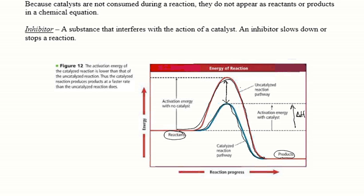An inhibitor is a substance that interferes with the action of a catalyst, so an inhibitor would slow down a reaction.